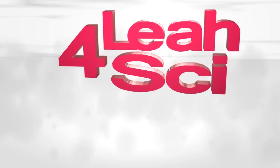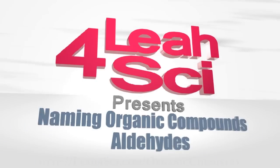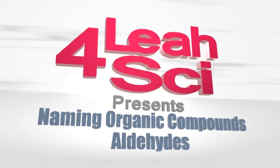Leah here from LeahForSci.com and in this video I will show you how to name aldehydes. An aldehyde is a molecule that can be represented by R bound to a C double bound to an oxygen single bound to a hydrogen where R represents the rest of the molecule and the C double bound O single bound H represents the aldehyde.